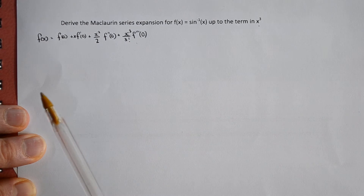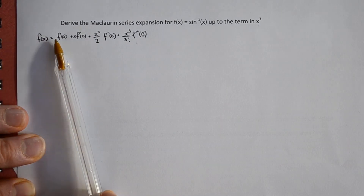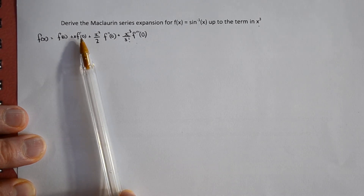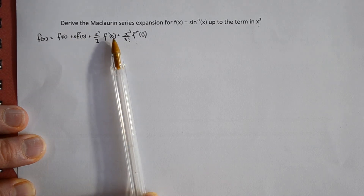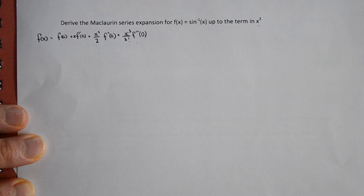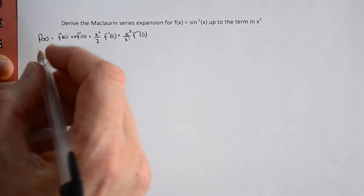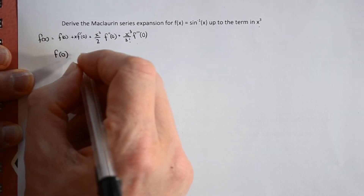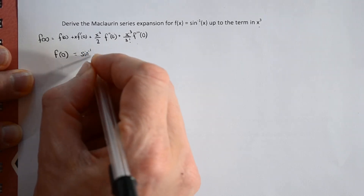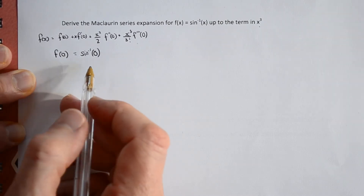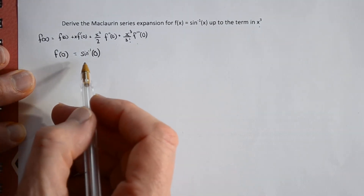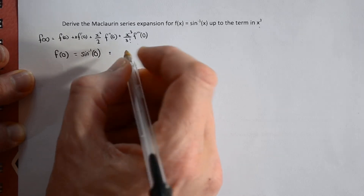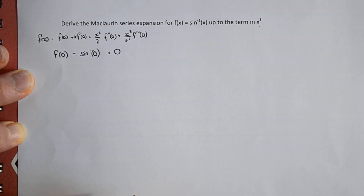I've written out the formula, so what we need to do now is in turn find f(0), the first differential and sub in x=0, second differential sub in x=0, and the same for the third. We'll take them one at a time. First, f(x) is arcsin(x), so f(0) equals arcsin(0). This is the inverse function, so it's asking for what angle we get a sine ratio of 0. Since sin(0) = 0, our answer is 0.